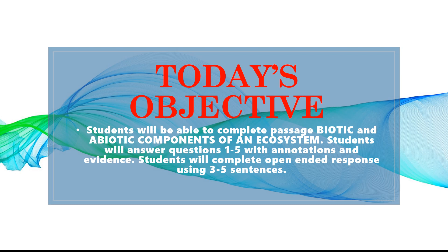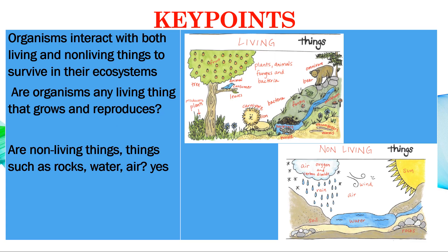We're going to go over the key points for today. Key point one: organisms interact with both living and non-living things to survive in their ecosystems. Key point two: organisms are any living thing that grows and reproduces — yes, organisms are living things that may grow and reproduce.